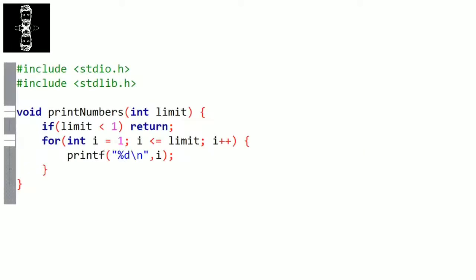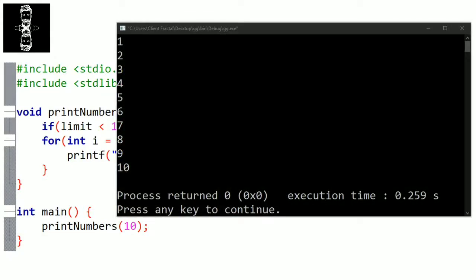Next function: let's create a function that prints all numbers from one to a given limit. It's of type void. Let's name it printNumbers. In parameters, we need the limit as an integer. Inside, we first check if the limit is smaller than one — if so, we directly use the return statement to exit the function. Otherwise, we use a for loop where i goes from one to limit, and inside we just print the number with a newline. Note that you're not obliged to set a return statement in a void function. If we choose 10 as a limit, it prints all integers from one to ten. If we choose minus five, it exits directly, so we get nothing printed.